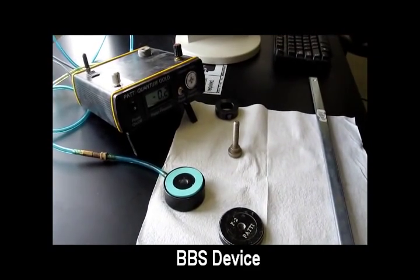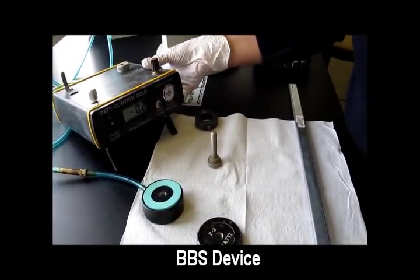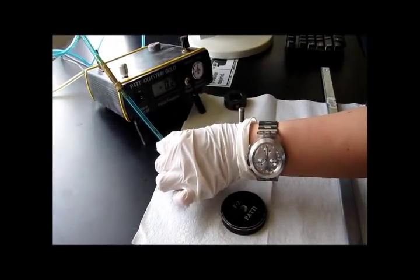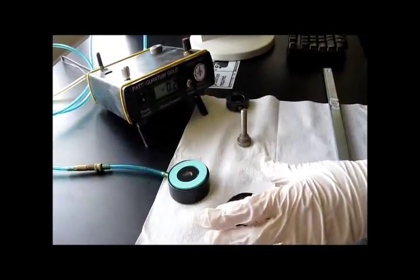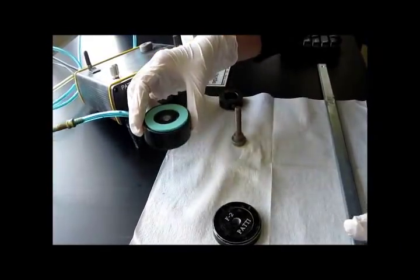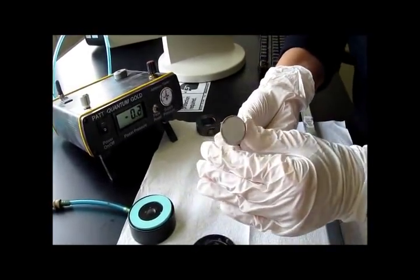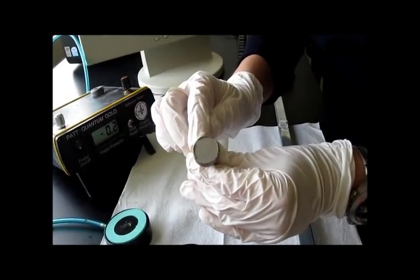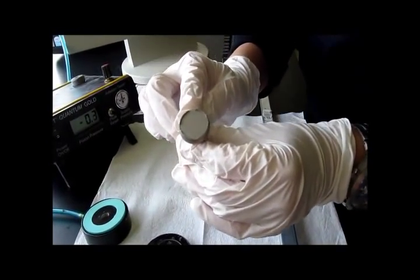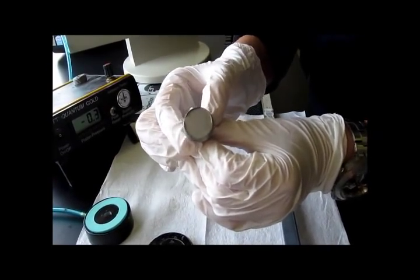The BBS device is comprised of a portable pneumatic adhesion tester, a pressure hose connected to the air cylinder, a reaction plate, a piston, and a metal pullout stub. The pullout stub has a rough surface that can prevent asphalt debonding from the stub surface by providing mechanical interlock and a larger contact area between the asphalt binder and stub.